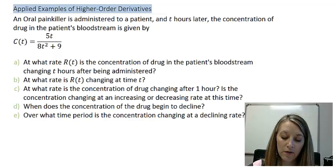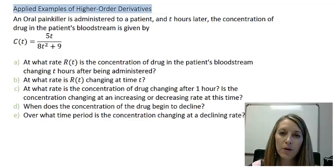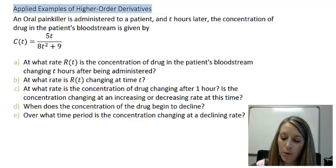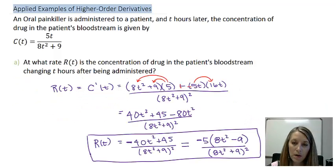In part A, we computed the first derivative, or the rate of the concentration of the drug in the patient's bloodstream. And then in part B, we computed the second derivative, the rate of the rate. Now, we don't need to recompute part A. I just copied that over from the last section. We took the derivative of it using the quotient rule, and we got these values here.